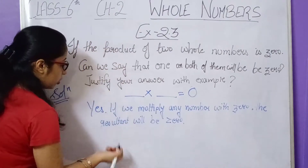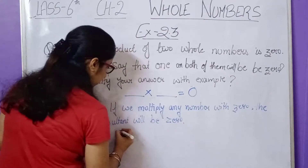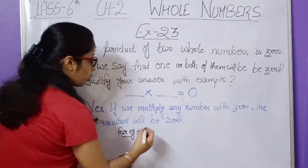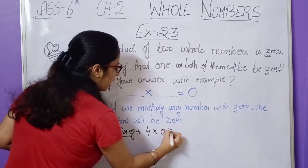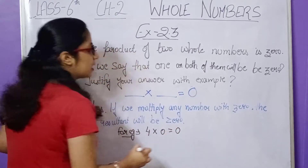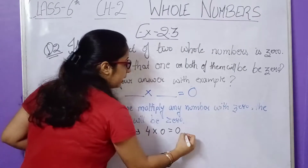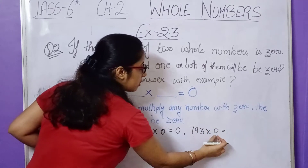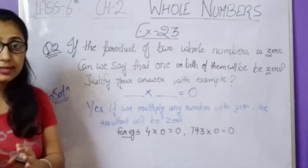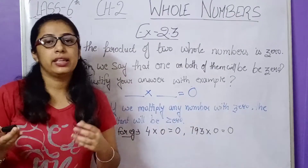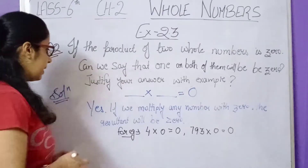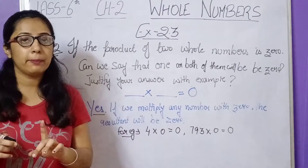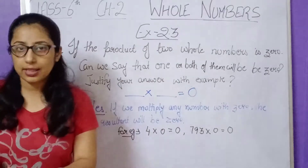I will justify it through examples. Suppose we multiply 4 by 0 — when we multiply this number with 0, the answer is 0. You can also use a big number. Suppose 793 multiplied by 0 — your answer is still zero. This shows that if one number is zero, the product is zero.